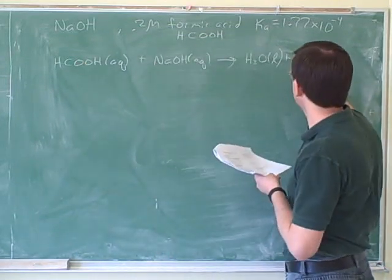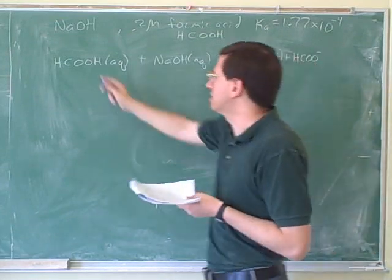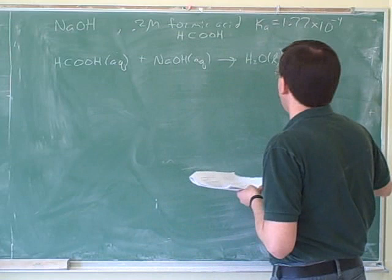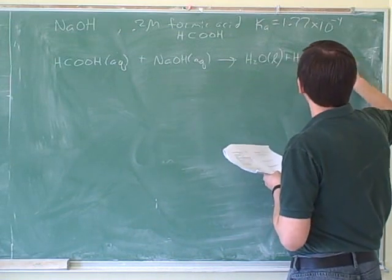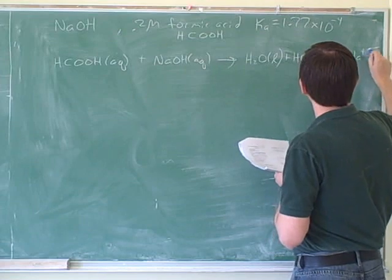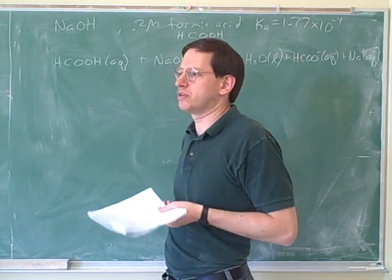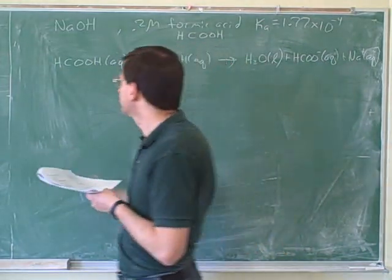Now, after this loses the proton, it's going to look like this. It doesn't really matter if you can draw this exactly right. This is the proton that it's losing. And there's also going to be the sodium ion. You can write those together or separate. This is the chemical reaction that's happening. We don't want to say these are reacting with water, because they'd rather react with each other.